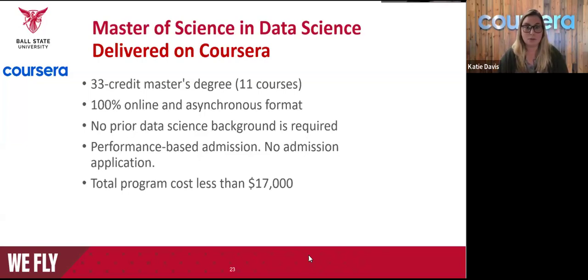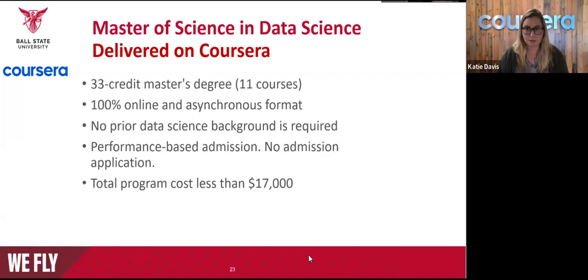A unique thing about this program is that there is no prior data science background required. We use performance-based admission. Regardless of your educational background, if you successfully complete a series of three initial pathway courses with a cumulative GPA of 3.0 or higher, you are officially admitted as a degree-seeking student. You don't have to worry about ordering transcripts or writing recommendation letters. The total tuition for the program is expected to be less than $17,000.